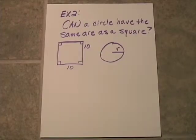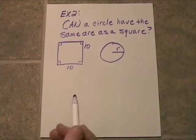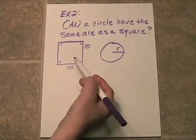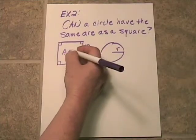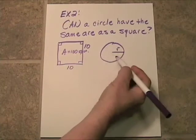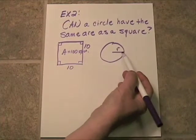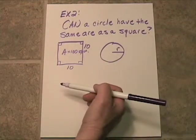Here's another neat problem. Can a circle have the same area as a square? Well, let's try it. If it's possible, I should be able to algebraically solve for r and get 100, because the area here is 100 square units. So, I should be able to, if it's possible, find some r that's going to generate 100 square units.